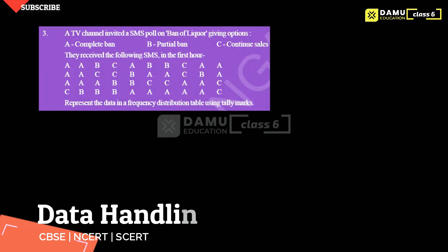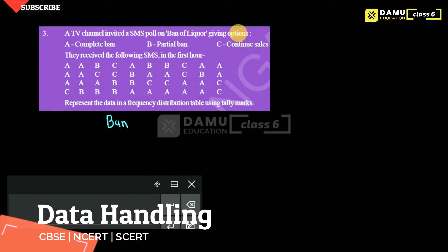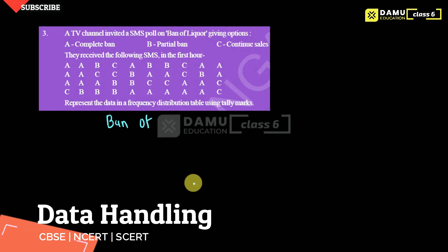Hello viewers, thanks for watching our videos. Please subscribe and hit the bell icon. In this module, we have to discuss a problem where a TV channel invited an SMS poll on the ban of liquor. Option A is complete ban, option B is partial ban, and option C is continuous sales. They received the following SMS in the first hour. We need to represent the data in a frequency distribution table using tally marks.